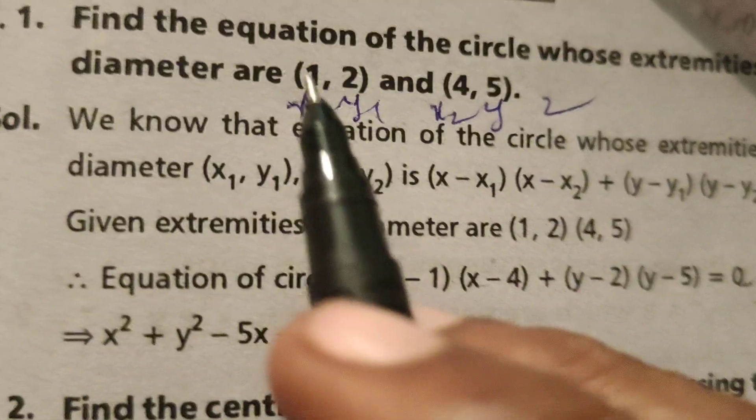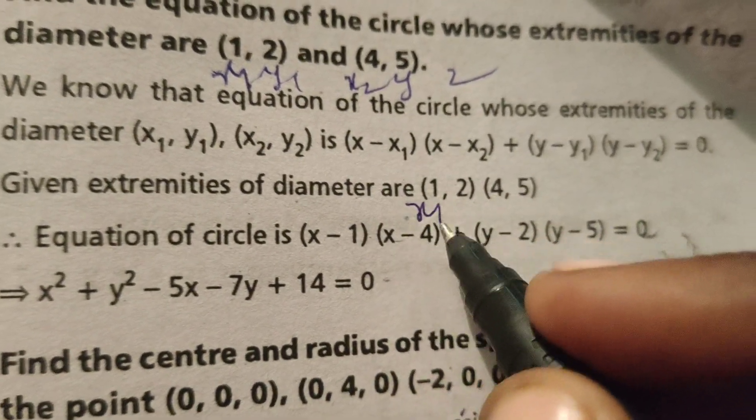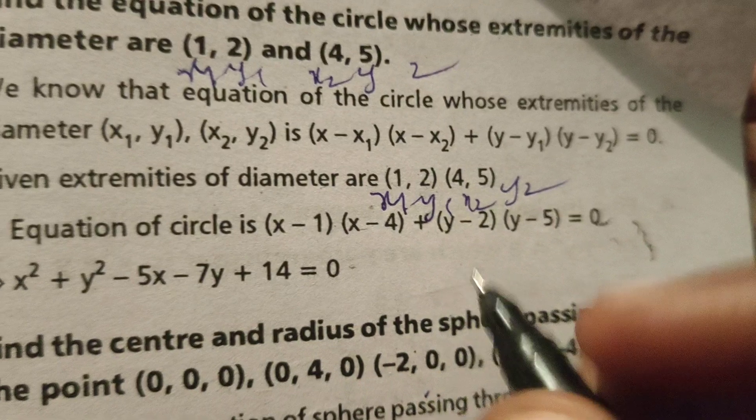Given extremities of diameter are (1,2), (4,5). This is x₁, y₁ and x₂, y₂. Therefore,